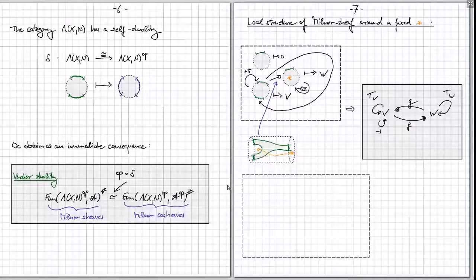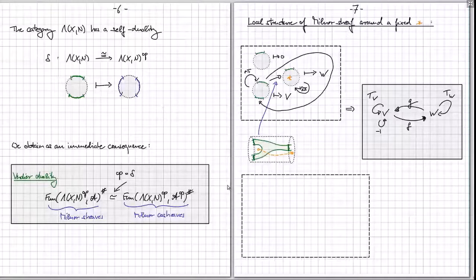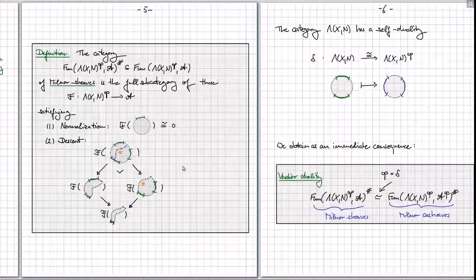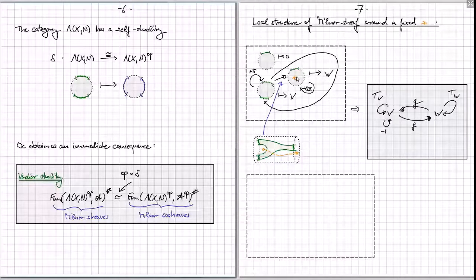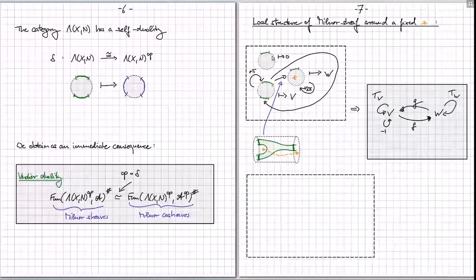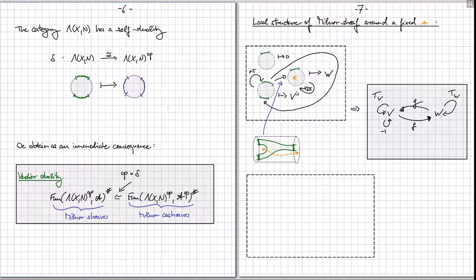Here's a hands-on computation. Working locally around a single special point, we take the abelian category of vector spaces. The normalization condition says the value on a disk with one interval not containing a special point is zero. The next interesting disk has two boundary intervals: that gives a vector space V. Rotating this disk with two intervals by 180 degrees is a morphism, and the descent conditions force this to be multiplication by minus one.